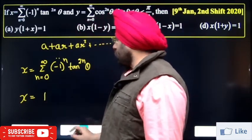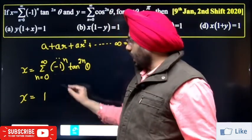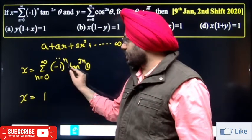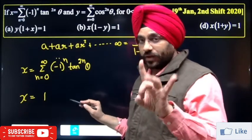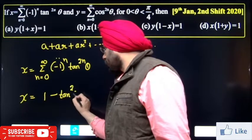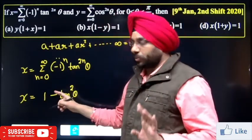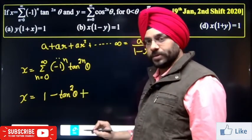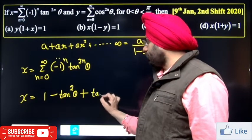For the next term, normally summation means plus sign, but put value of n = 1: this term becomes minus 1, times tan squared theta. So the second term is minus tan²θ. For n = 2: minus 1 squared is positive, so we get plus tan⁴θ.